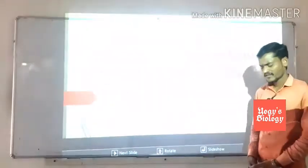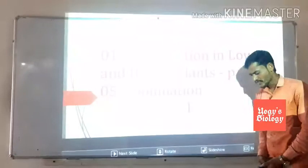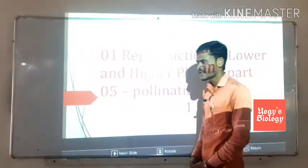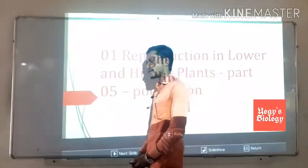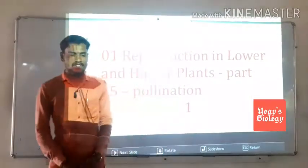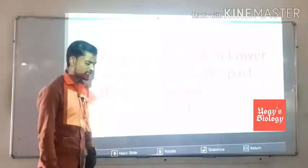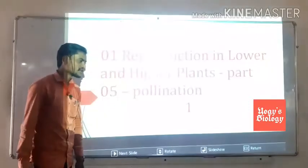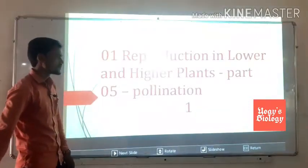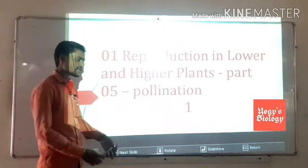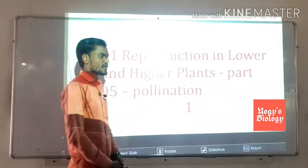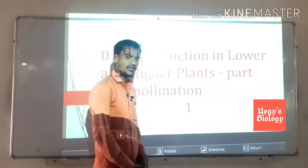The anther is the male reproductive organ, individually called the stamen. The stigma is the female reproductive organ, individually called the carpel.